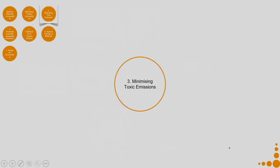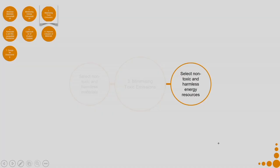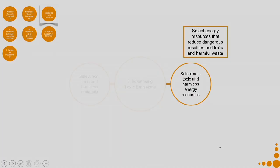Let us come to the third criteria — minimizing toxic emissions. As far as possible, you should avoid toxic emissions. If not, see how you can minimize them. Select non-toxic and harmless materials, and select non-toxic and harmless energy resources. For energy resources, you can select resources that reduce dangerous residues and toxic and harmful waste.